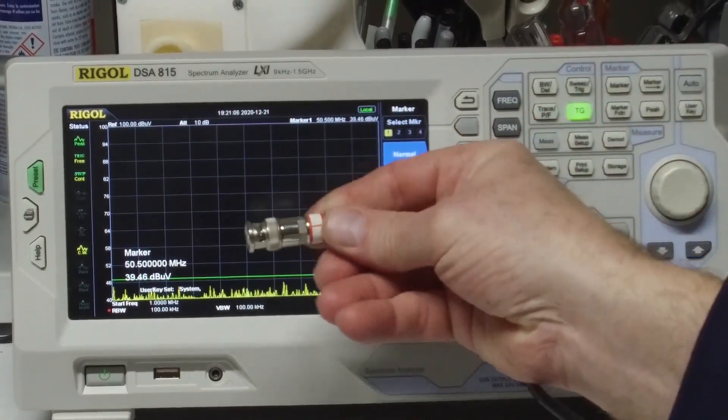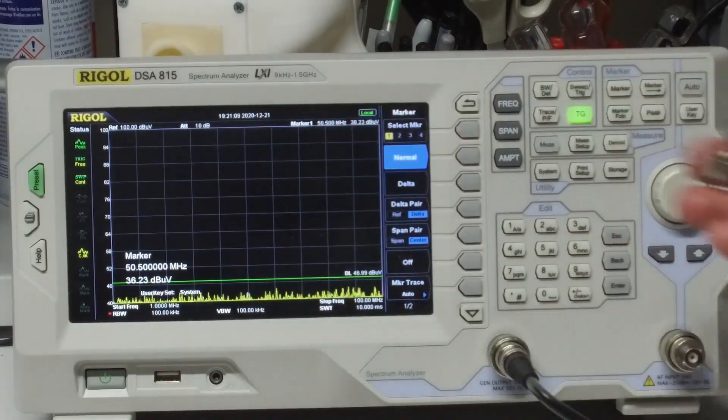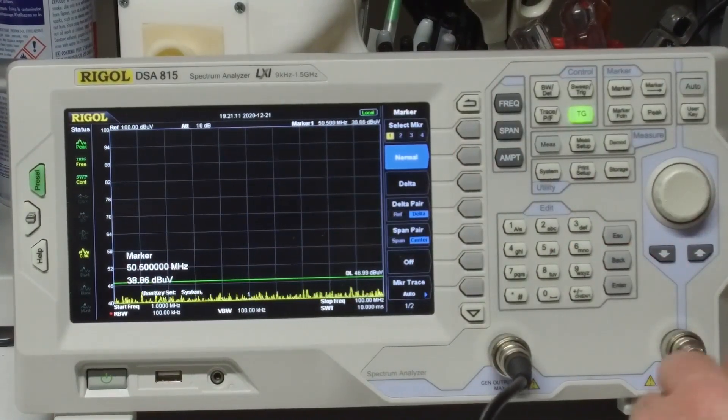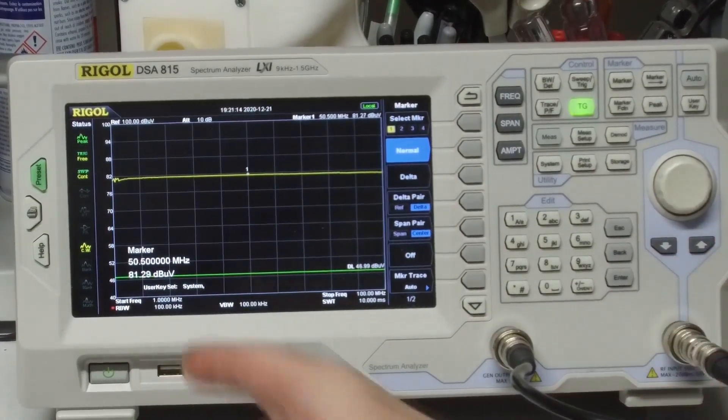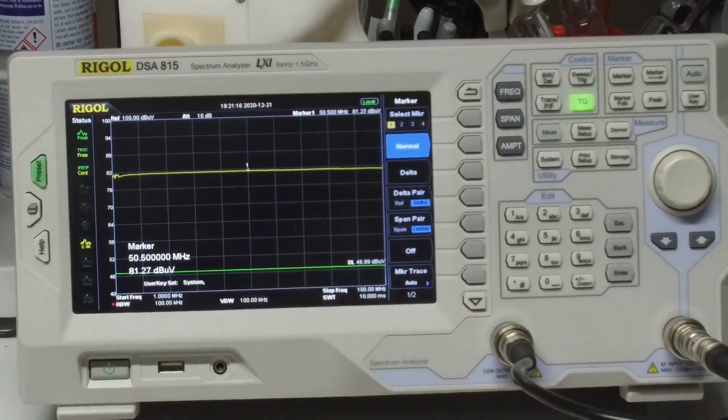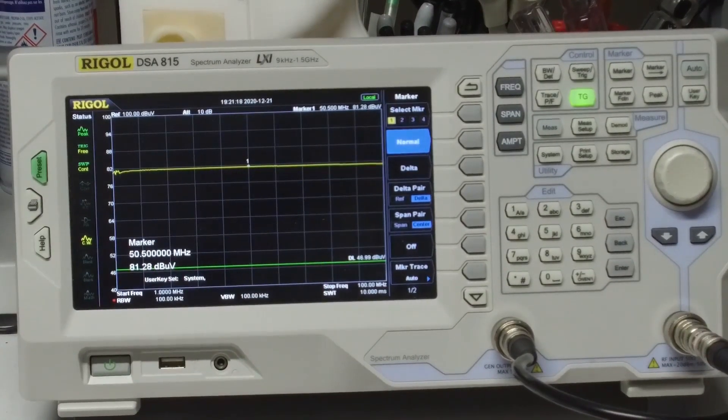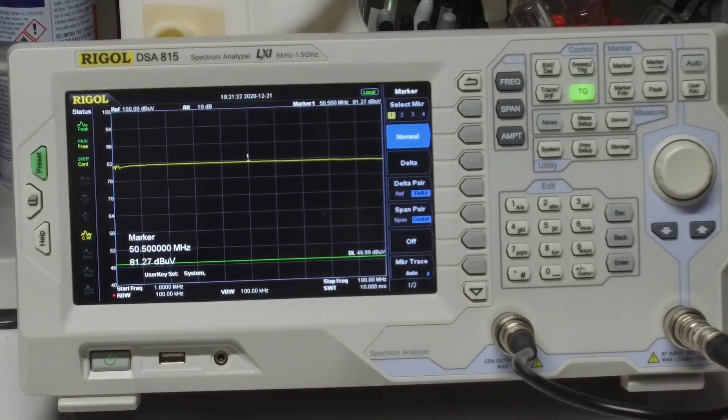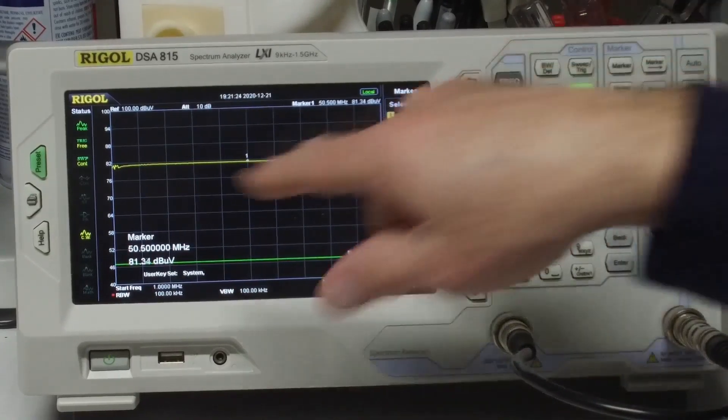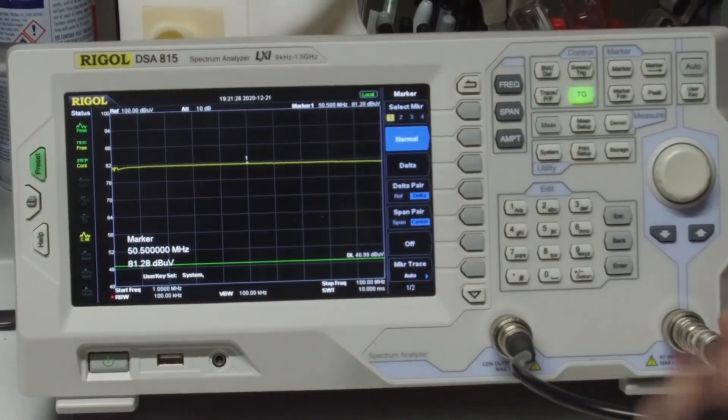I can take this 10 dB attenuator here, put it in circuit. And our marker now is at 81 dB. So yeah, that attenuator is roughly 10 dB, and its frequency response is nice and flat.